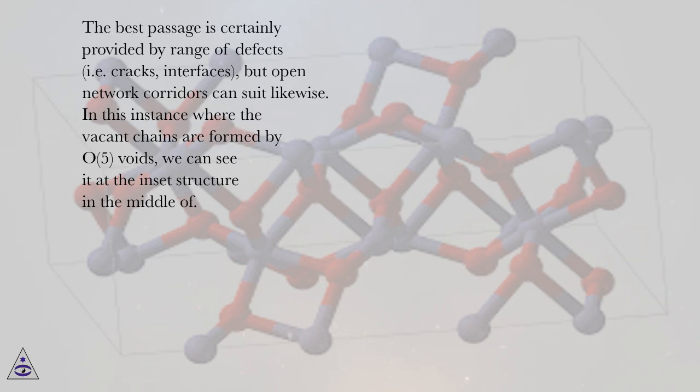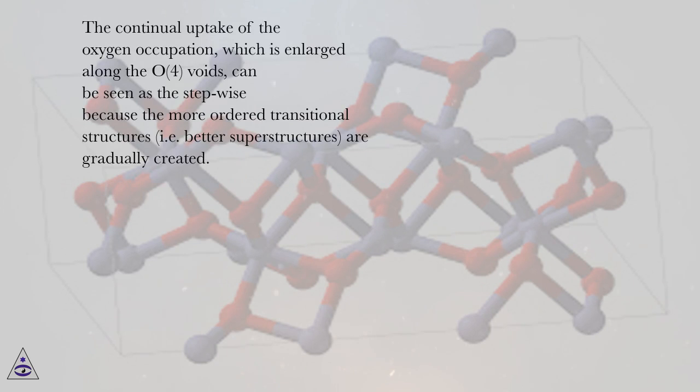In this instance where the vacant chains are formed by O5 voids, we can see it at the inset structure in the middle. The continual uptake of the oxygen occupation, which is enlarged along the O4 voids, can be seen as stepwise because more ordered transitional structures, i.e. better superstructures, are gradually created.